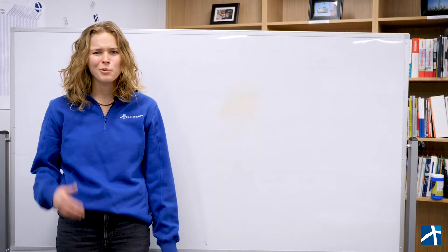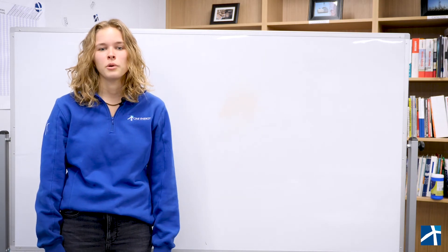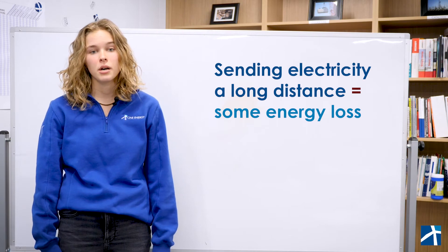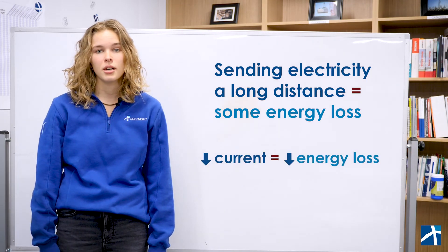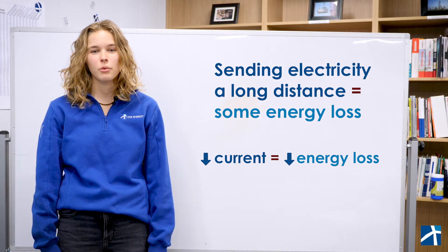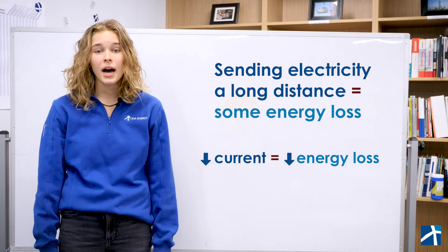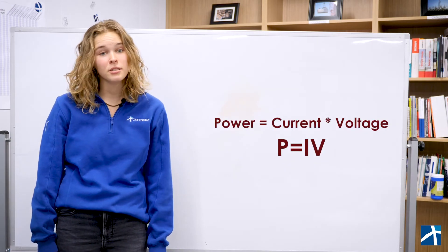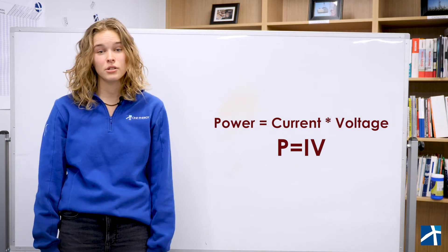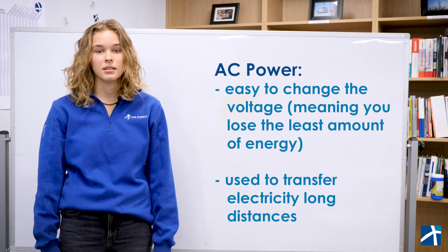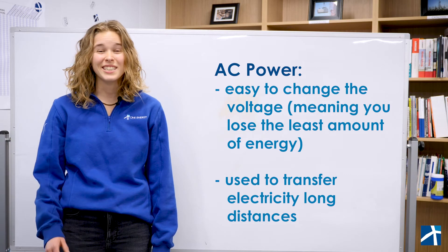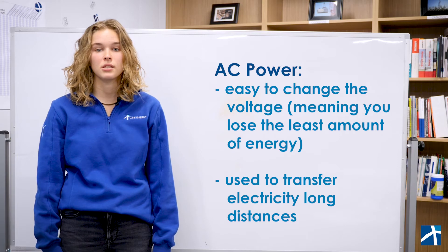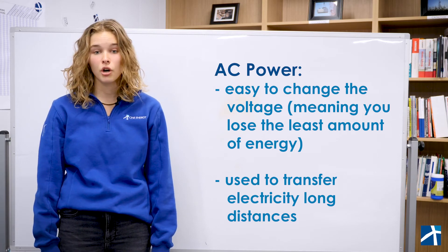Why would one type of current be better than the other? When we want to send electricity over a long distance, some energy is going to be lost along the way. To minimize the energy lost as it travels, we want to send it with a low current — but we'll need a higher voltage to provide the same power at the end. Remember the equation P equals current times voltage? With AC, it's very easy to change the voltage, so we can lose the least amount of energy. Because of this, electricity is sent over long distances using AC with a high voltage and a low current.